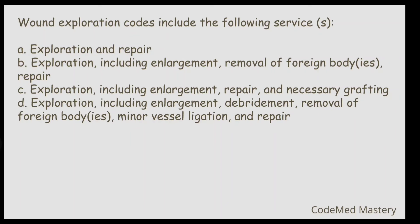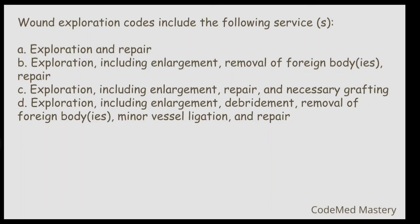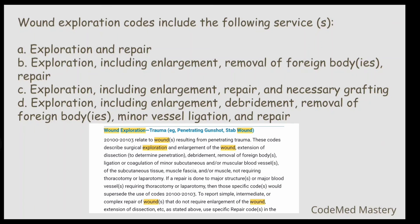Next question: Wound exploration codes include which of the following services? Option A: exploration and repair. Option B: exploration including enlargement, removal of foreign body, repair. Option C: exploration including enlargement, repair, and necessary grafting. Option D: exploration including enlargement, debridement, removal of foreign body, minor vessel ligation, and repair. Wound exploration comes under musculoskeletal. In the CPT index under 'wound, exploration,' you find code range 20100–20101. The guideline there lists enlargement, extension, debridement, removal of foreign body, minor vessel ligation — matching option D.